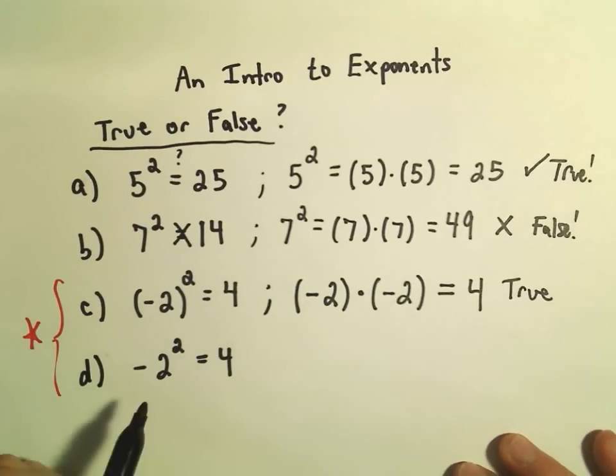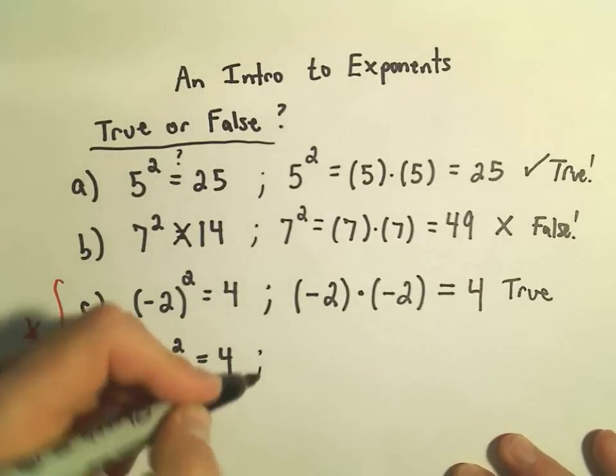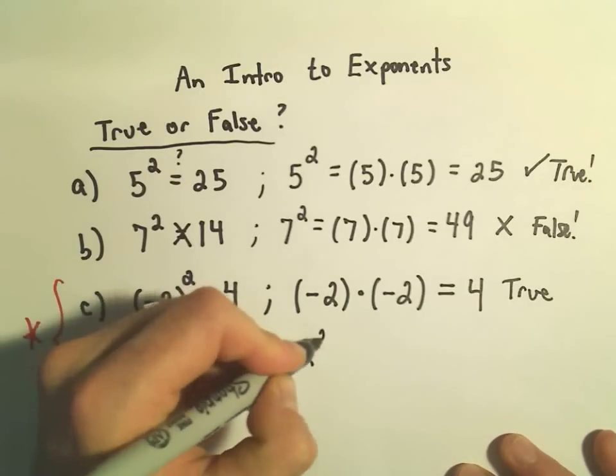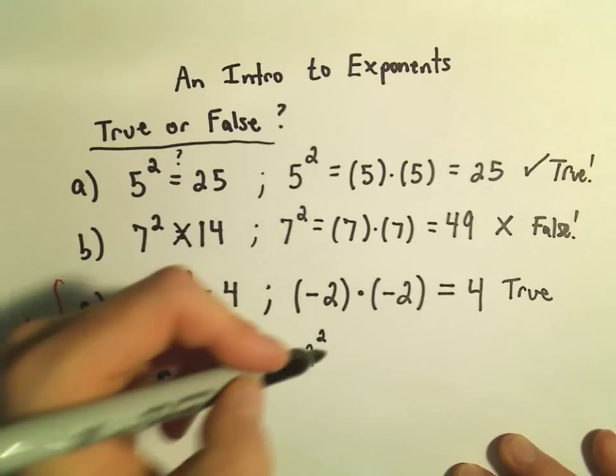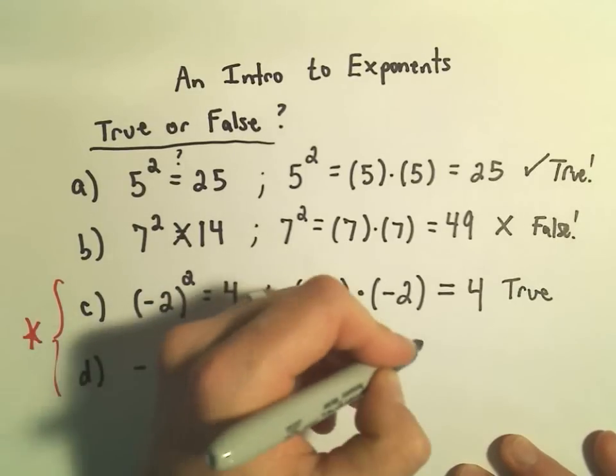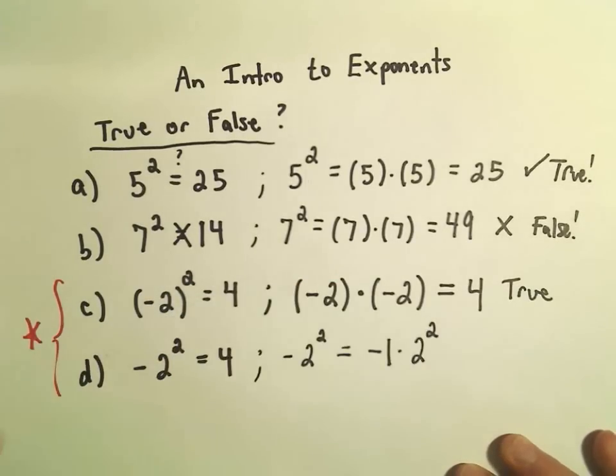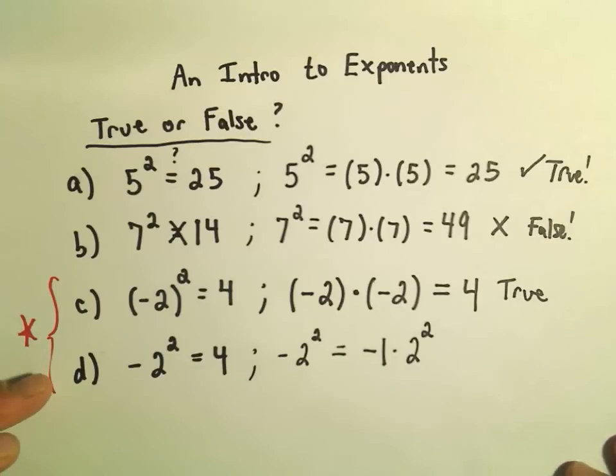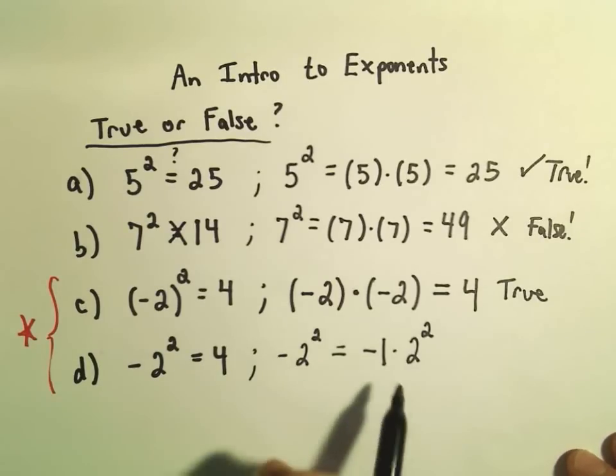Now let's look at this last one. Notice now that the negative is not in the parentheses. So when we write negative 2 squared, you can write it out as negative 1 times 2 squared. And now we have to think about order of operations.